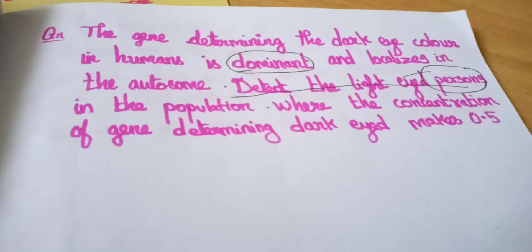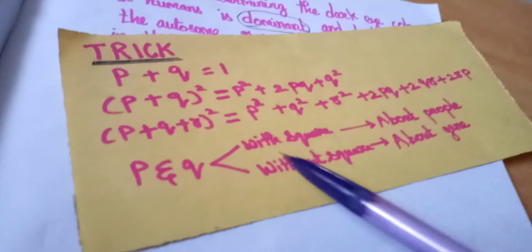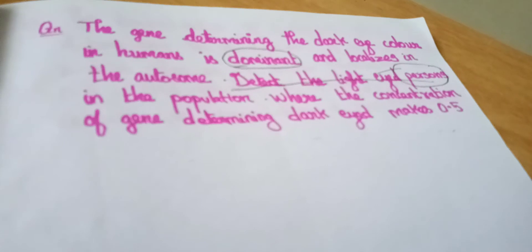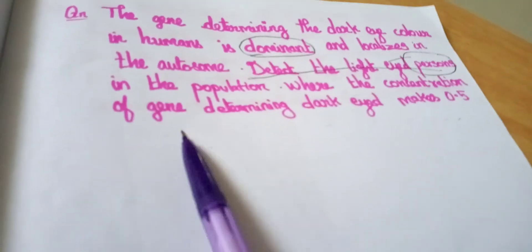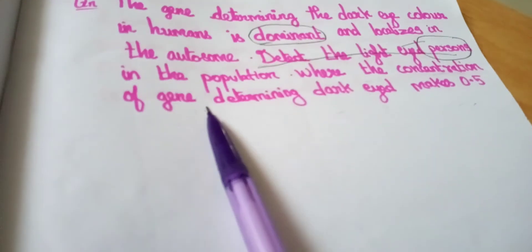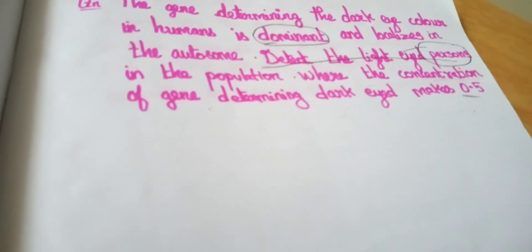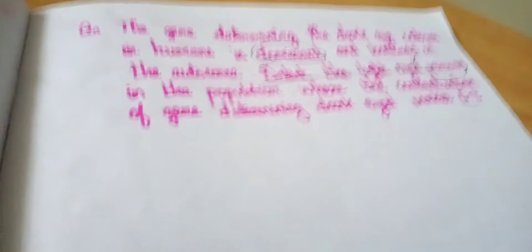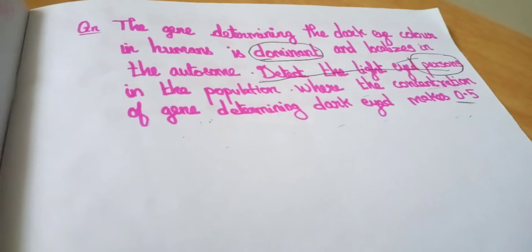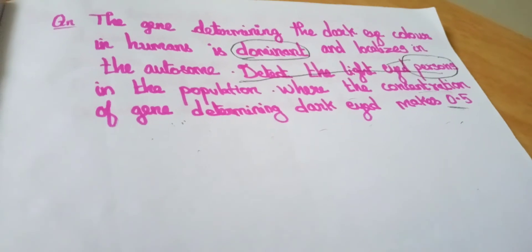If they are saying about persons, we should take with square. See here, with square. They are given concentration of gene. They are speaking about gene. So this data, we should take without square. See this? Without square for gene. Dark eyed, dominant, then about gene. So we should take P. P equals 0.5.